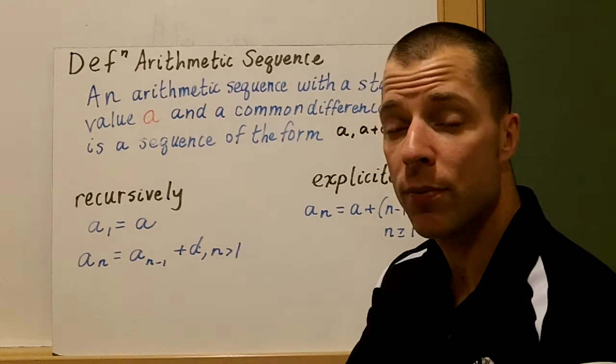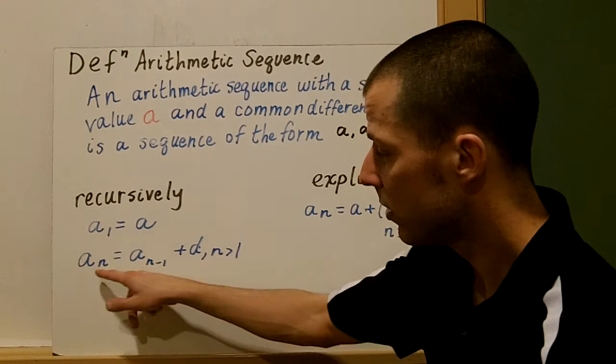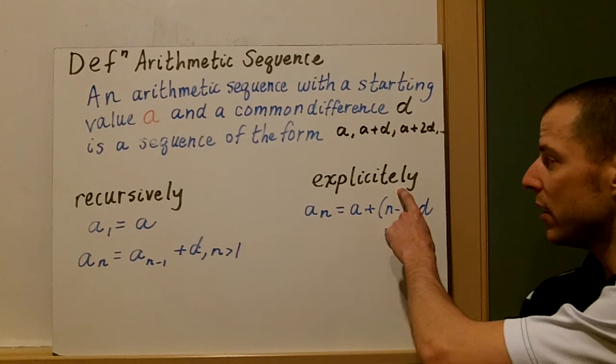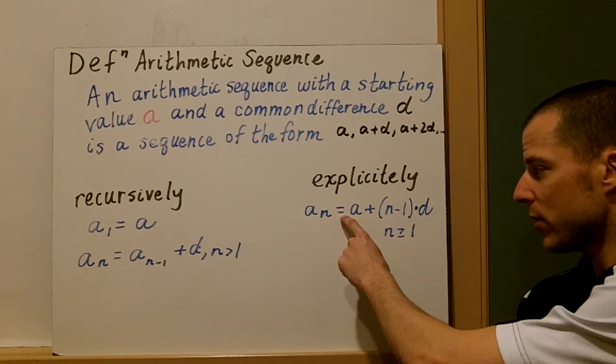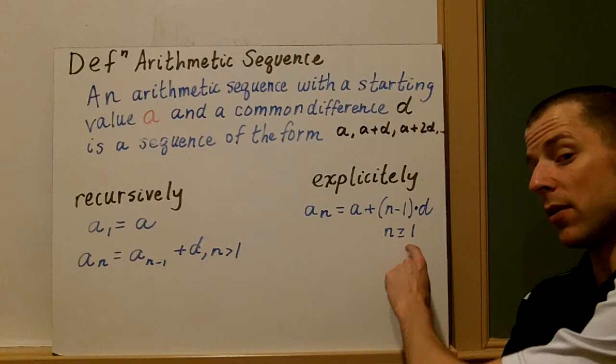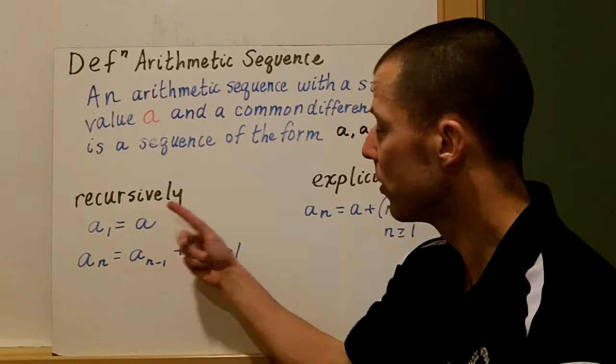Recursively means we use the previous term to get the next term. The rule is: whatever term we want equals the previous term plus the common difference D, where N must be greater than 1. For the explicit definition, whatever term we want equals A plus the quantity N minus 1 times the common difference D, where N can be greater than or equal to 1. So those are our two rules — recursive and explicit.